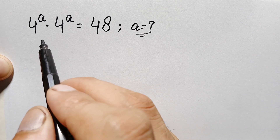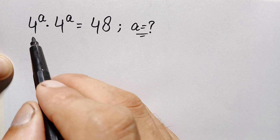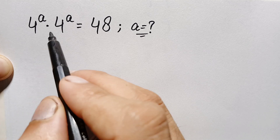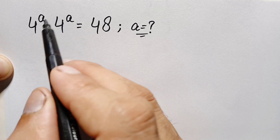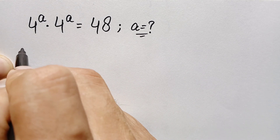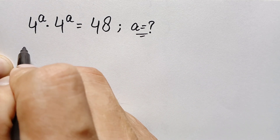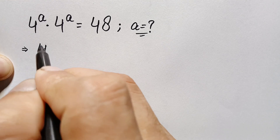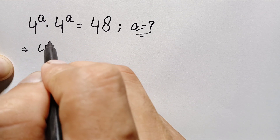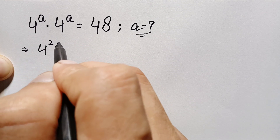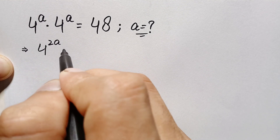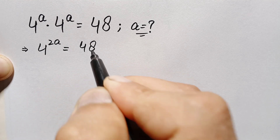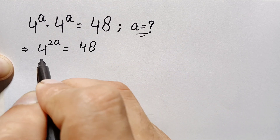Look at the left hand side — the base is the same. When we have the same base, we can add the powers. So we write the base one time and add the powers: this will become 4 raised to power a plus a, which is simply 2a, equal to 48.